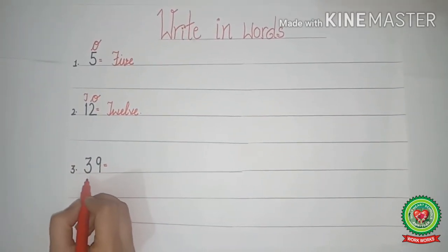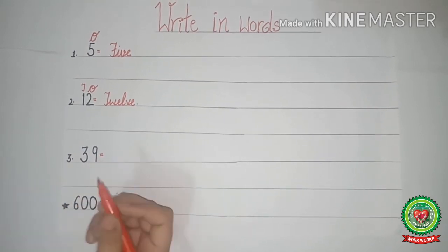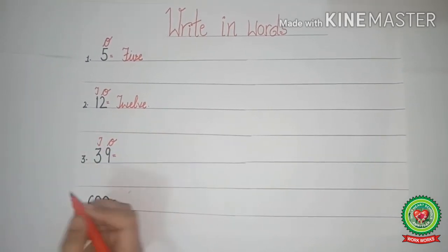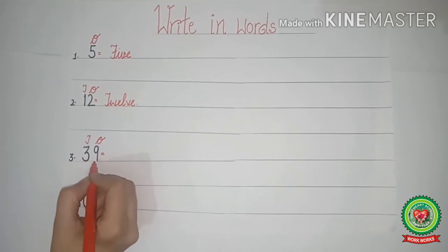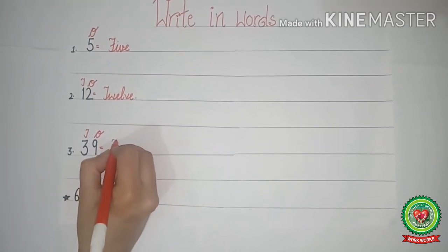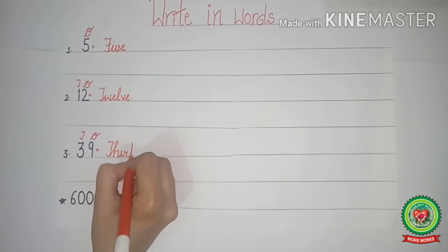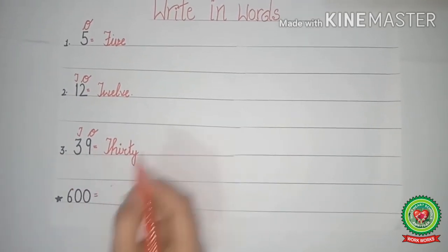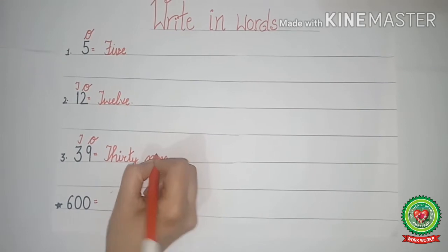Now the next number is 3 and 9 - that is 39. How do we call them? 3 and 9 - 39. Again our first step is to write the place value chart, that is 1s and 10s. They both are best friends so we will speak together and write together - 3, 9 - 39. Spell 30 - T-H-I-R-T-Y. Spell 9 - N-I-N-E.